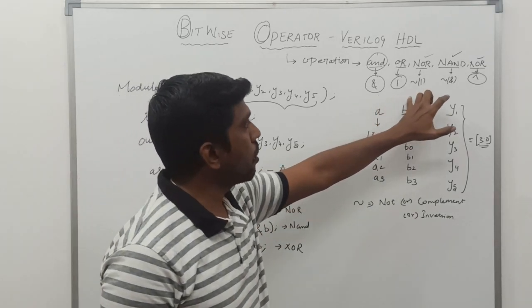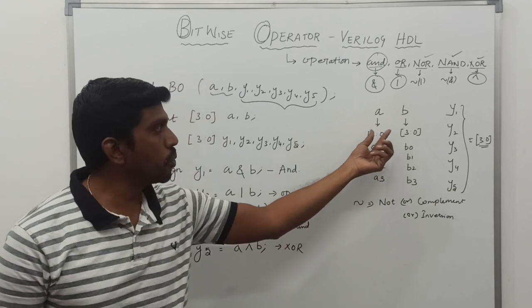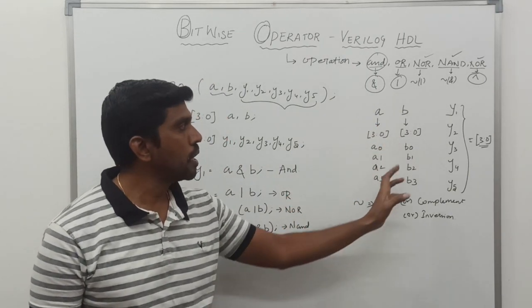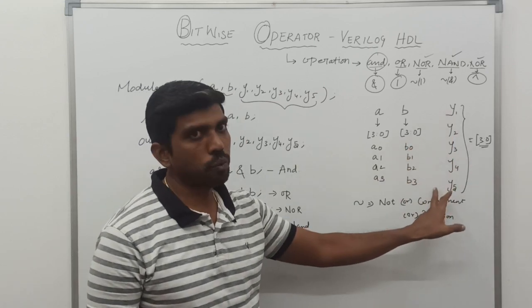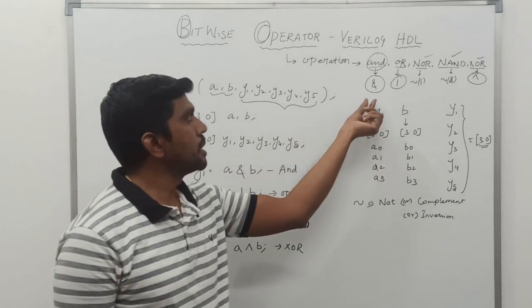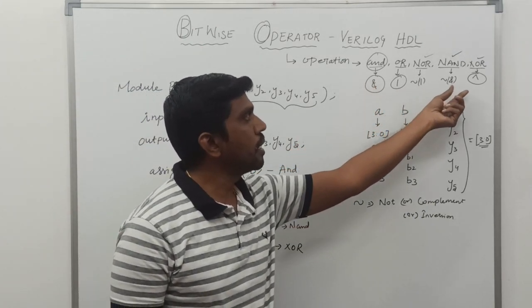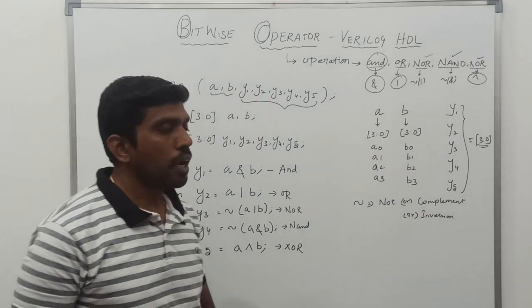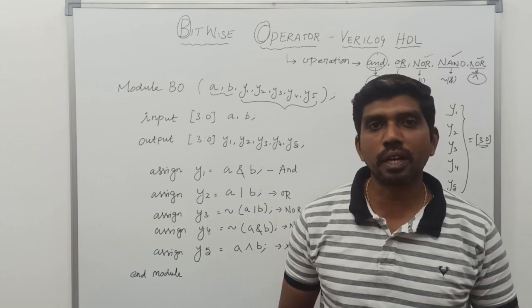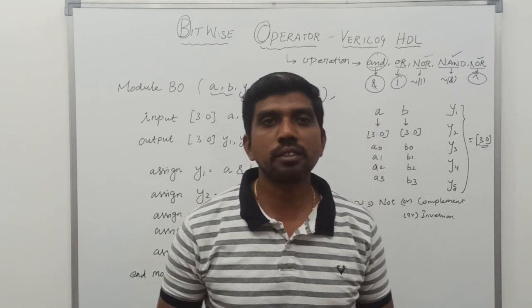These five operations come under bitwise operators. In this program I am taking two variables, each containing 4-bit values. The output variables are Y1 to Y5, just to declare the operations. You should remember the symbols of AND, OR, NOR, NAND, and XOR operations. I hope you understand the concept well. If you are seeing my video for the first time, kindly subscribe and support us to make more videos. Thanks for watching my channel. Thank you.